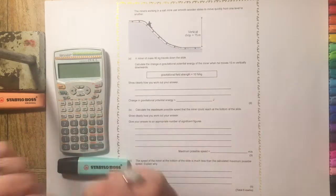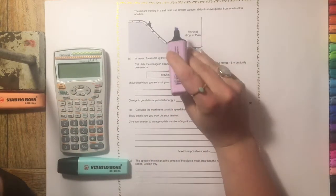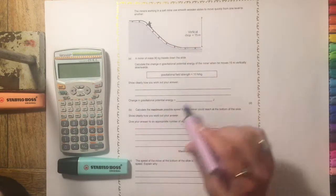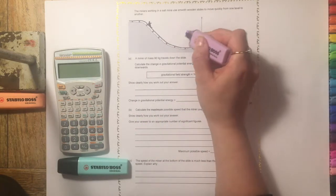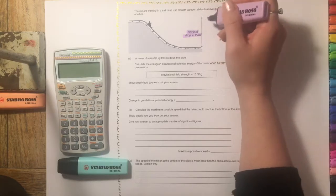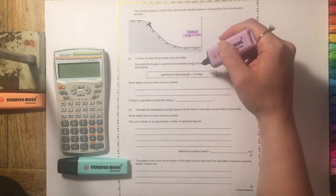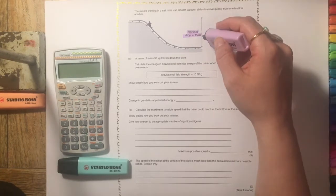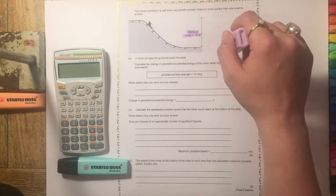Let's start off and read through the question. The miners working in a salt mine use smooth wooden slides to move quickly from one level to another. It tells us here that the vertical drop is 15 meters and shows us with an arrow. It's really important that you look at diagrams because there's often really important information in the diagrams.